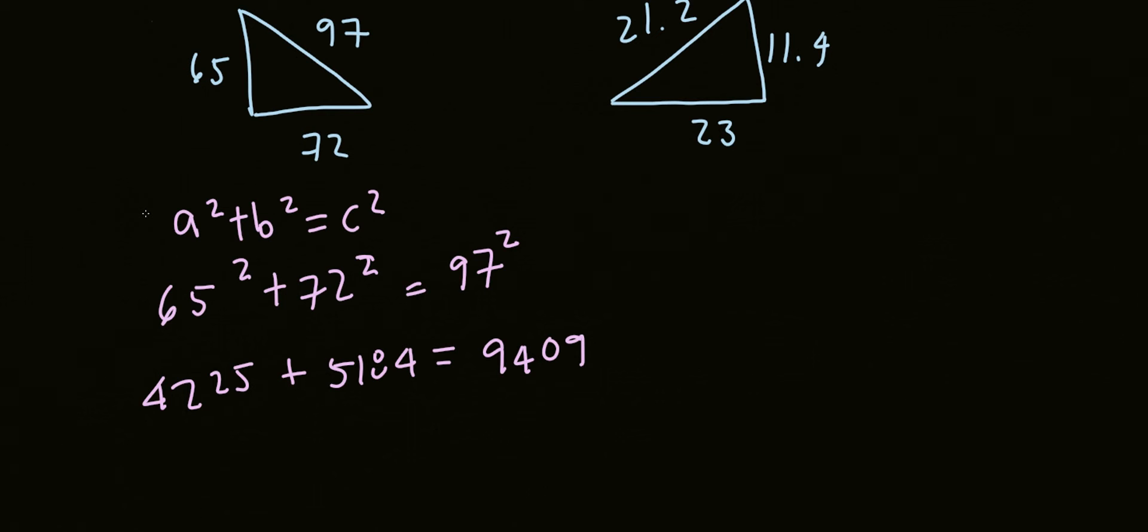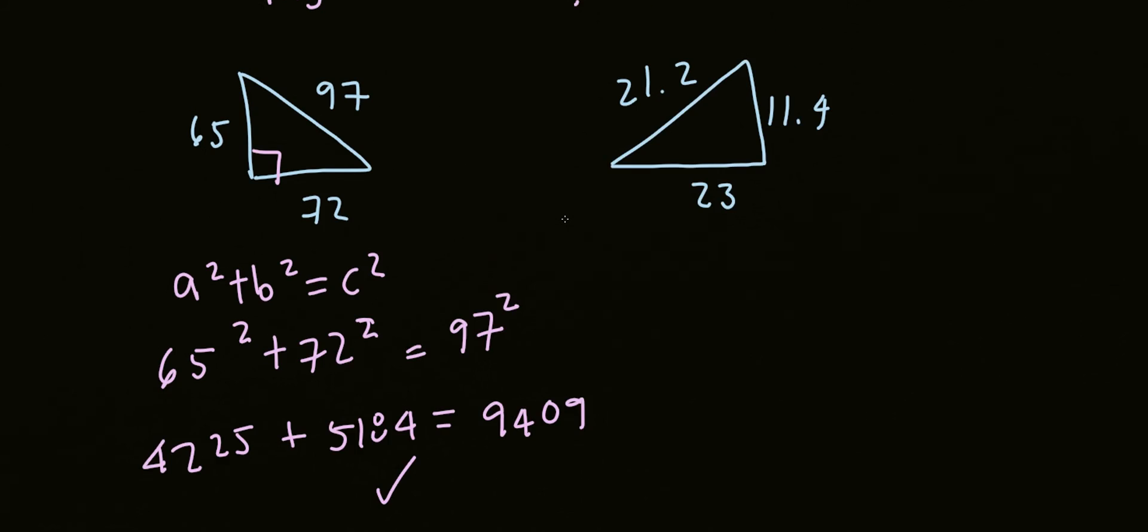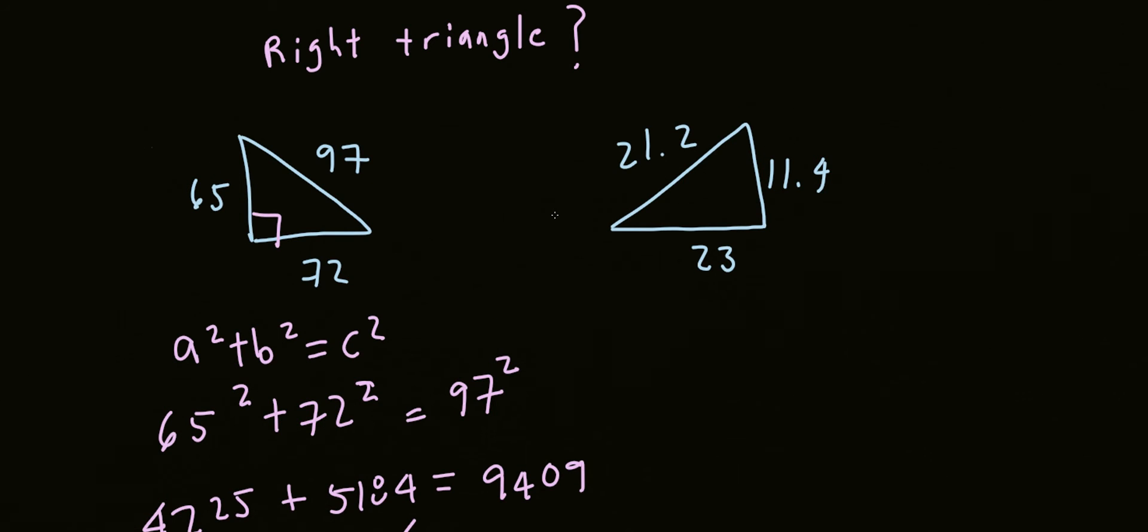So let's see if that's right. Yep, so that's right. So this is a right triangle. We could put a little symbol on the sides indicating that's a right triangle.